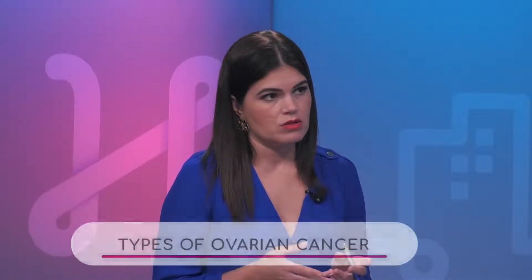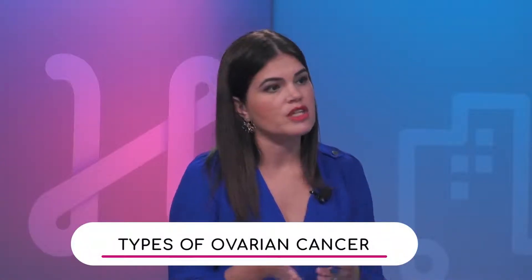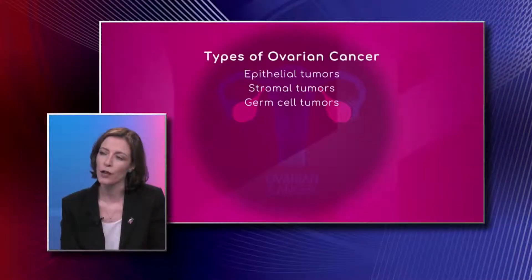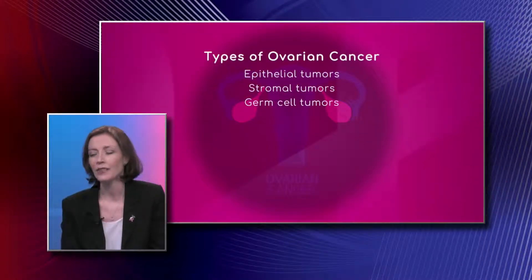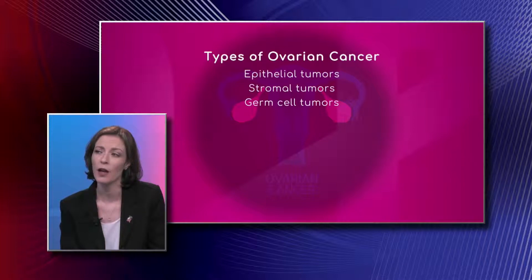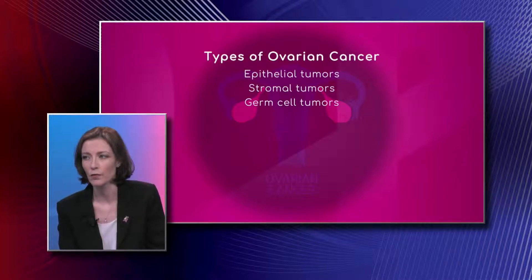There are different types of ovarian cancer — what differentiates each cancer? It's actually where it begins. There are different types of tumors. The epithelial tumor comes from the outer portion of the ovary. It is the big majority of ovarian cancers — about 85 to 90 percent — and they're also the most aggressive, unfortunately.